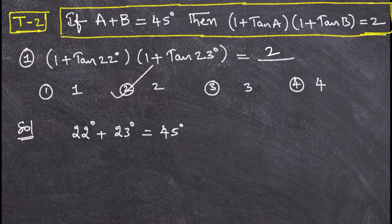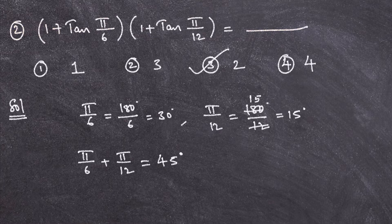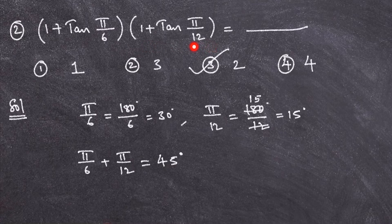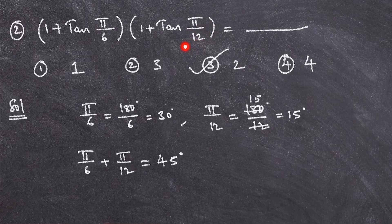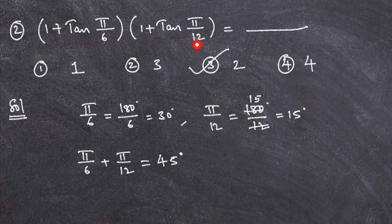Now we will see one more problem of the same type. You see the second one — what they are asking: (1 + tan π/6)(1 + tan π/12) = what? As we know this trick, you should immediately get this idea whenever you see a problem of the form (1 + tan a)(1 + tan b).